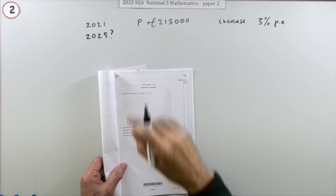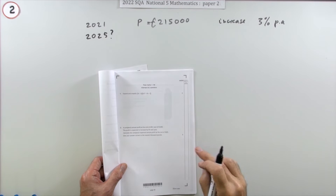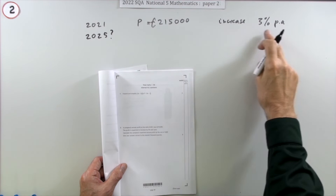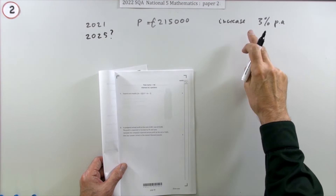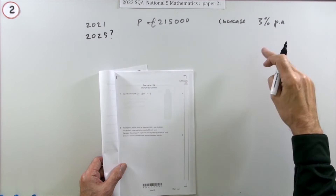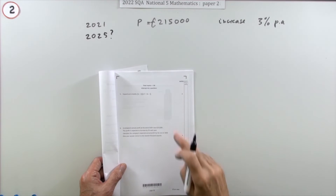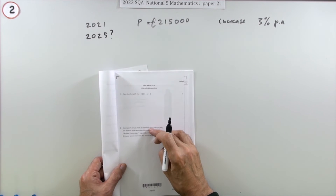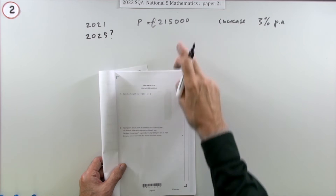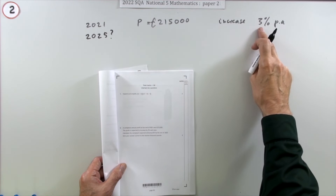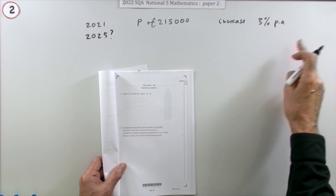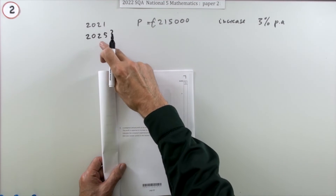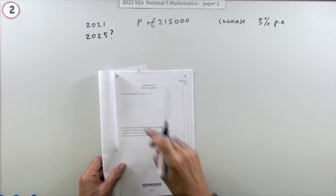Number two from the 2022 National 5 Paper 2 — a three-mark question. This is the percentage increase, compound interest type question. It gives you the company's profit at the end of 2021, and if that's expected to rise 3% each year, what would it be in 2025 — four years later?